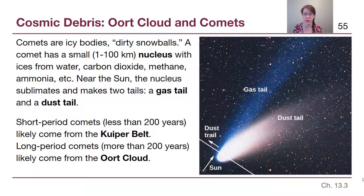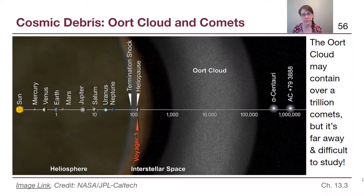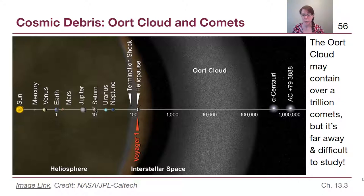Long-period comets, taking more than 200 years between sightings, or ones we only see once, actually likely come from a region even farther from the Sun called the Oort Cloud. The Oort Cloud may contain over a trillion different objects, but it is extremely far from the Sun.